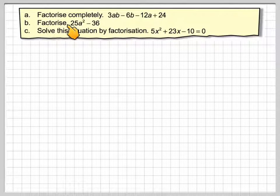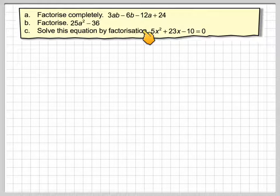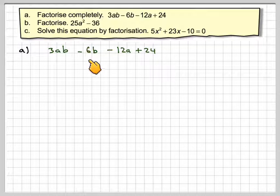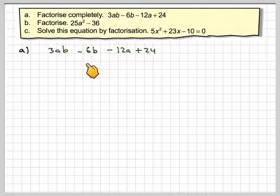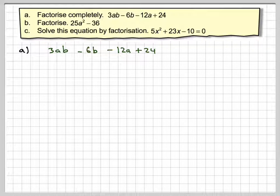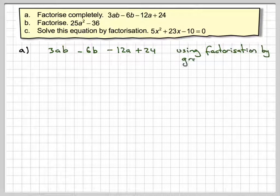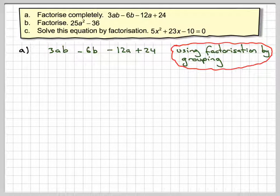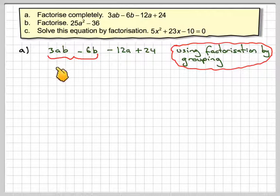So it says factorize completely 3ab minus 6b minus 12a plus 24. So looking at this, there's no one common factor apart from taking out a 3, but there's no other common factor. So what we'll do is we'll use factorization by grouping. So we'll group the first two terms together, look for a common factor.